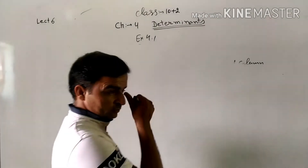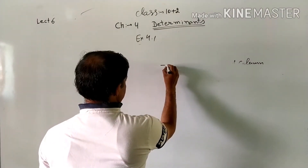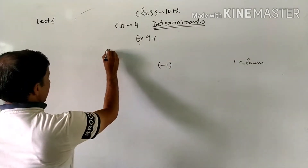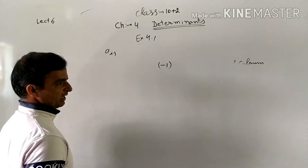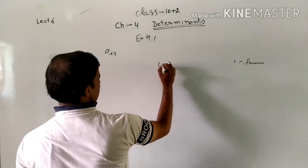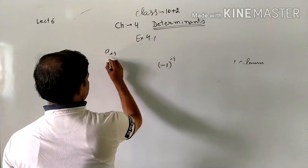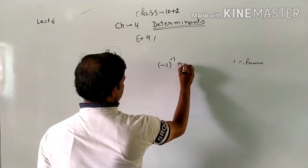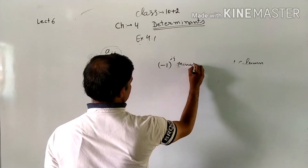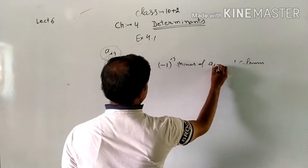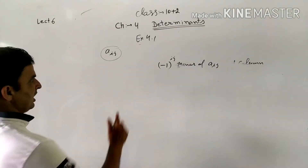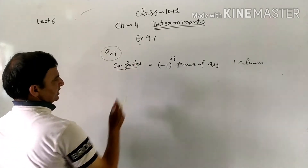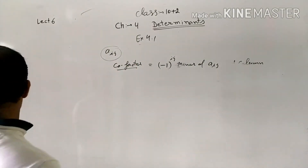Now let us call A(i,j) the element. The co-factor of A(i,j) is denoted as C(i,j). That is called our co-factor. We will be able to get the example of this method clear.